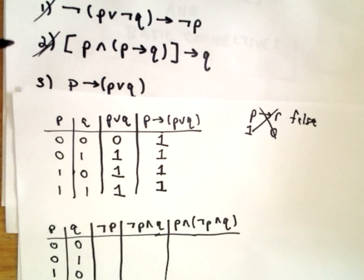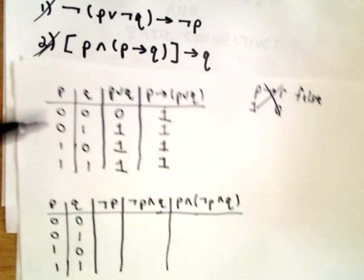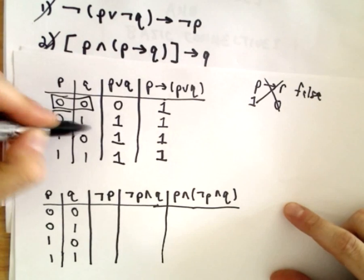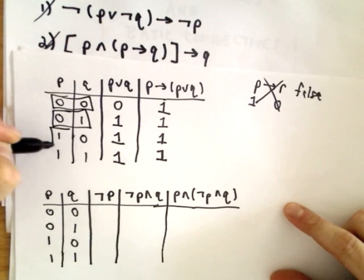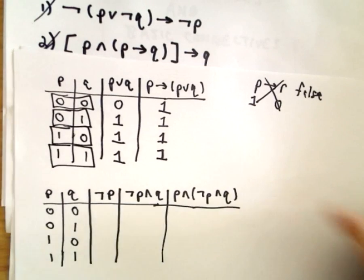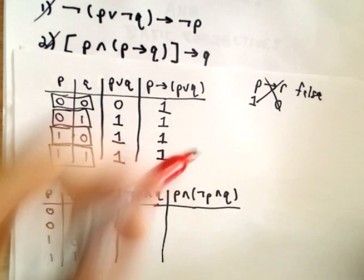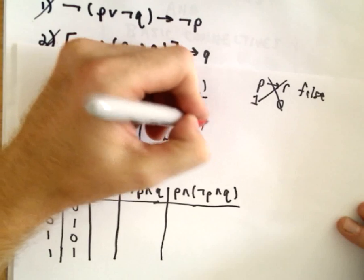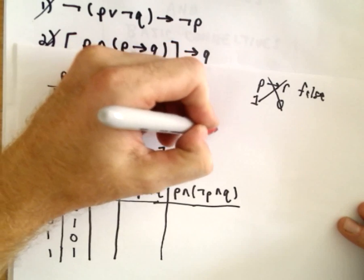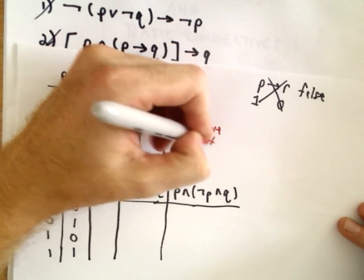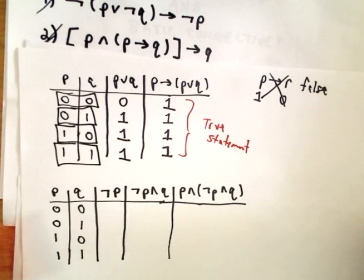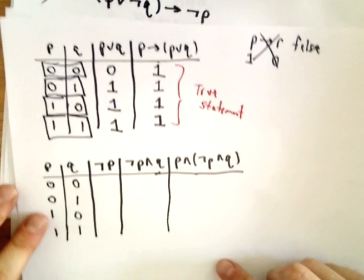Much like examples 1 and 2, notice that for all of the different possible truth values for P and Q we got a true statement every single time. So that compound statement was always true.